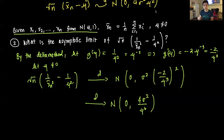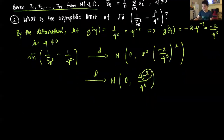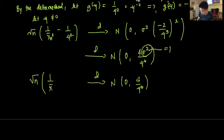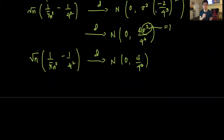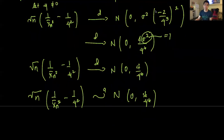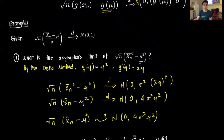Recall from the problem statement that the sequence draws were from a Normal with mean μ and variance 1, so σ² = 1. Therefore, √n · (1/x̄ₙ² - 1/μ²) converges in distribution to N(0, 4/μ⁶). We can also write this as an approximate distribution: 1/x̄ₙ² - 1/μ² approximately follows N(0, 4/μ⁶). That concludes this video on the delta method — I hope you enjoyed it, and thank you very much!